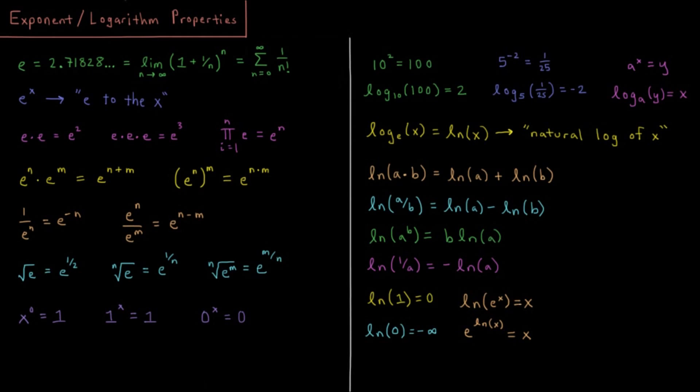We'll start off by reminding ourselves what the number E is, often indicated by a lowercase letter e, so that is equal to the number 2.71828, etc. It's not a repeating number, it's not a terminating number, it just keeps going forever as an irrational number.